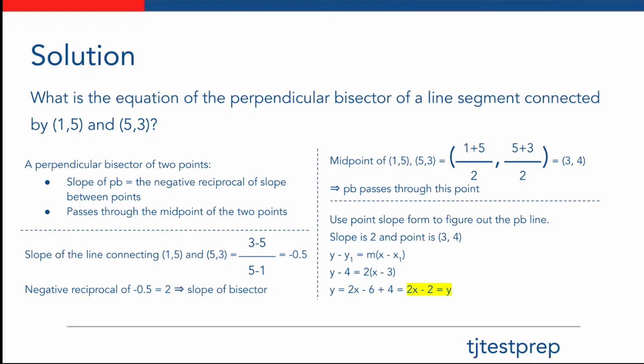A perpendicular bisector has two traits: its slope is the negative reciprocal of the slope between the two points, and it passes through the midpoint of both the two points.